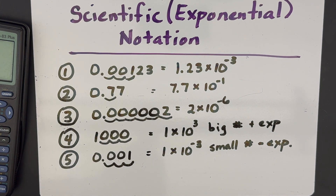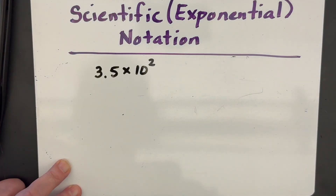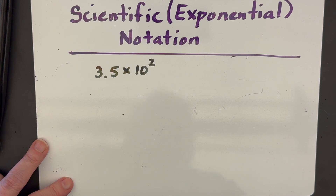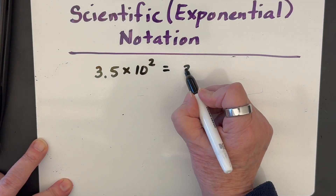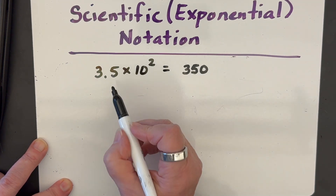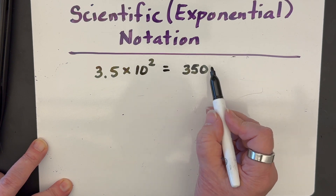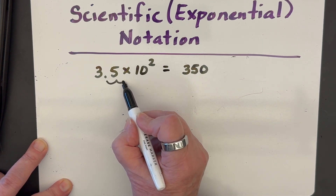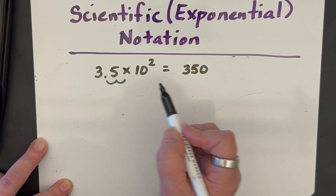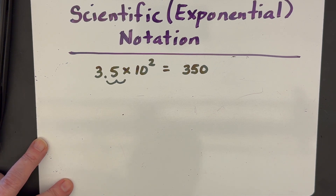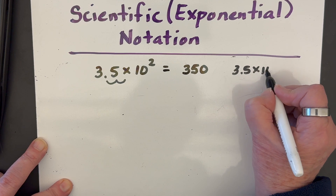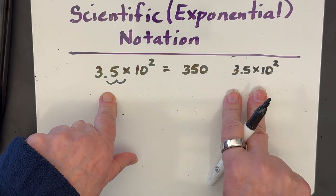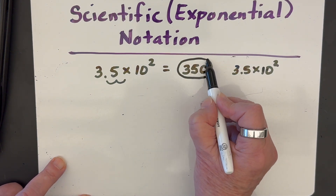Now let's try going the other way — taking numbers out of scientific notation and writing them in regular notation. For our first example, 3.5 times ten to the second power: positive exponent means big number. We move the decimal two places, fill in a zero, and it becomes 350. You can double-check by going backwards — move the decimal one, two places and you get 3.5 times ten squared, matching the original.